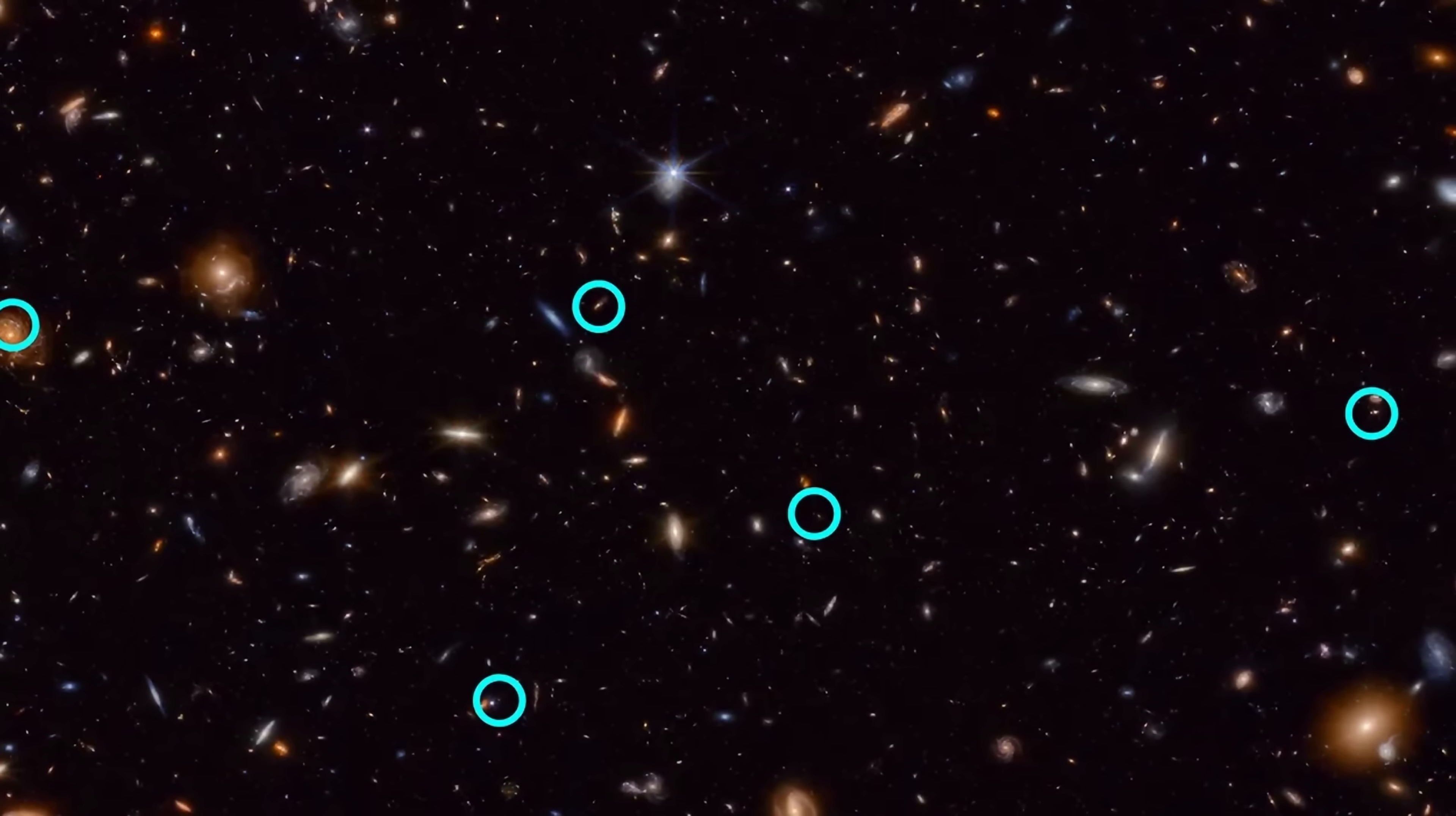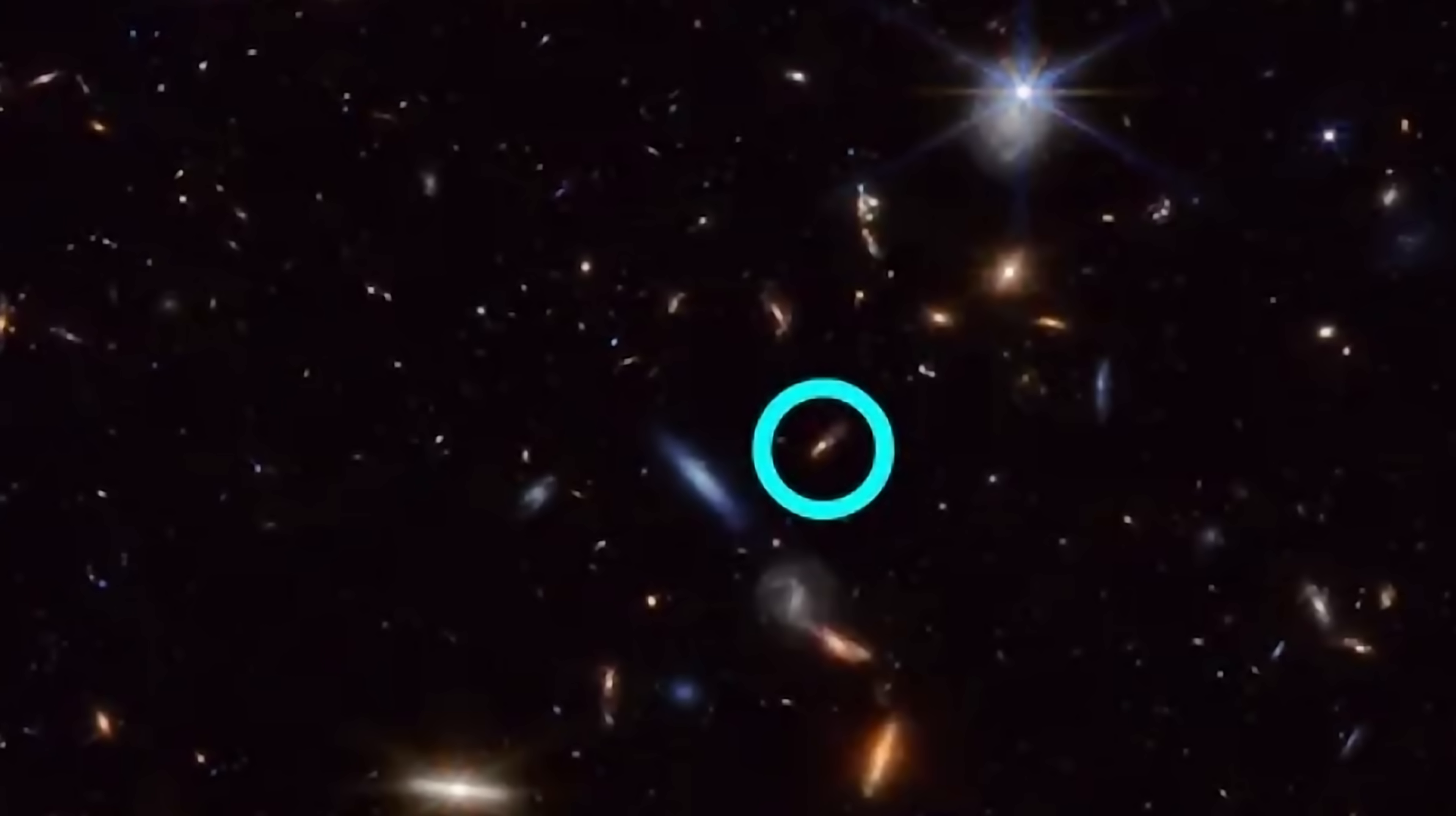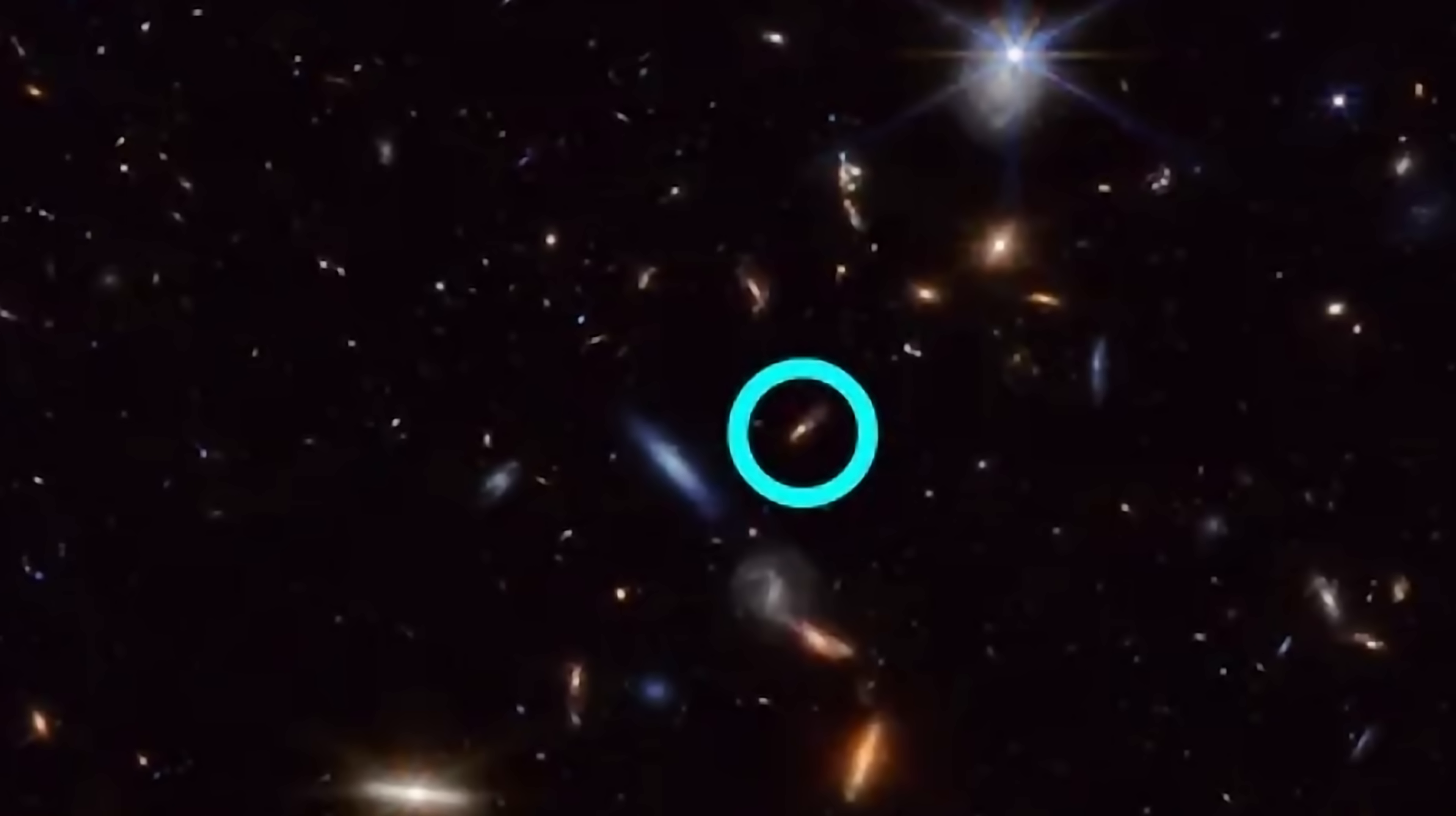But I guess the question is, how exactly did they find these? Because honestly just by looking at these images it's practically impossible to tell the galaxy apart, so how do you even tell apart a supernova in this galaxy? And here the strategy was pretty simple.